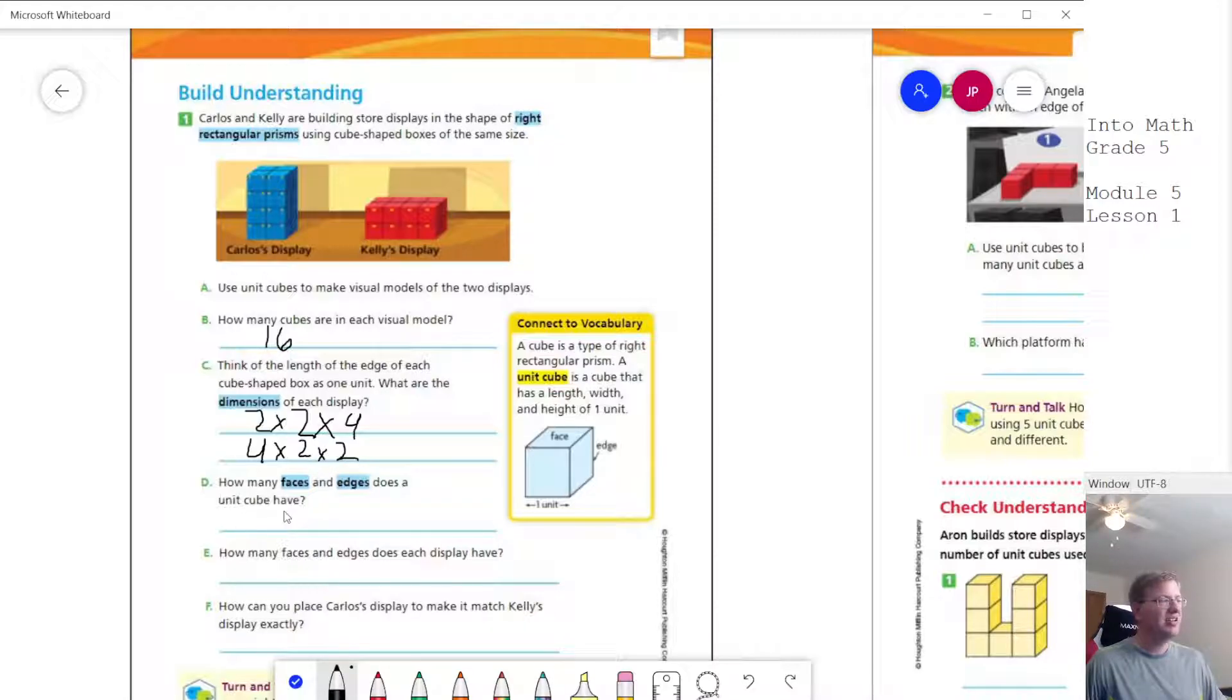How many faces and edges does a unit cube have? Well, I was looking through my stuff. I did not find a cube, but I did find a handy dandy Nintendo controller, which is at least the right kind of shape matching more of Kelly's display than Carlos. I guess if I turned it this way, it could kind of work. So it's going to work the same way because it is going to be a rectangular prism, even though it is not a perfect cube. So we have one, two, three, four. And then I can rotate five, six, seven, eight, nine, ten. And then the backside, eleven and twelve for the edges.